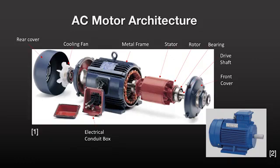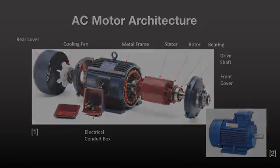A cooling fan conducts heat from the stator coil magnets out the rear of the motor. The conduit box holds the electric wires from the line power and distributes them to the windings.